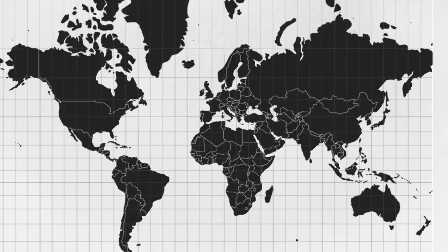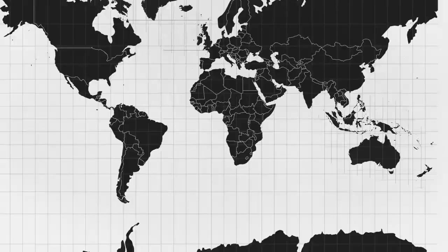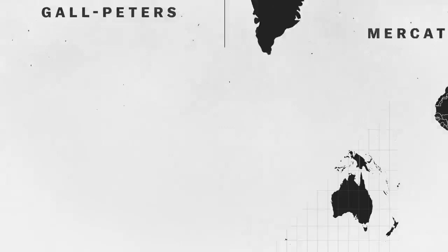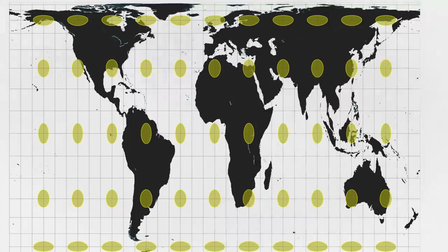So if you want to see a map that more accurately displays land area, you can use the Gall-Peters projection. This is called an equal area map. Look at Greenland and Africa now — the size comparison is accurate, much better than the Mercator. But it's obvious that the country shapes are totally distorted. Here are those dots again so that we can see how the projection preserves area while totally distorting shape.